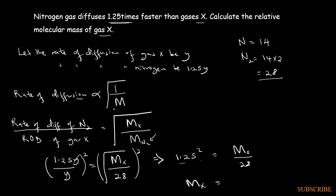That is 43.75, which is roughly 44. So the molecular mass of gas X will be 44 grams, all coming from Graham's law that deals with rate of diffusion in relation to molecular mass.